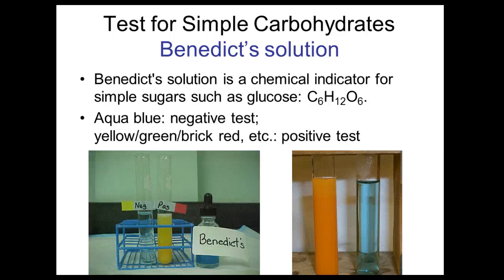Tests for simple carbohydrates, or monosaccharides, or glucose — remember we talked about glucose, fructose, galactose, ribose, and deoxyribose. These are all simple sugars made up of one sugar unit, a monosaccharide. We use Benedict's solution as a chemical indicator for simple sugars such as glucose.